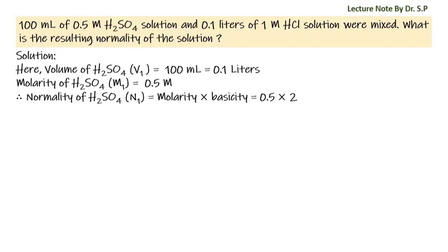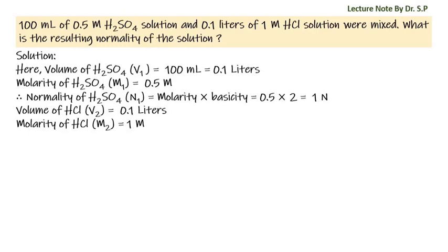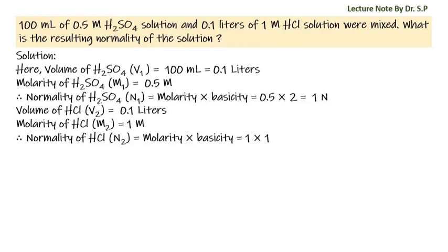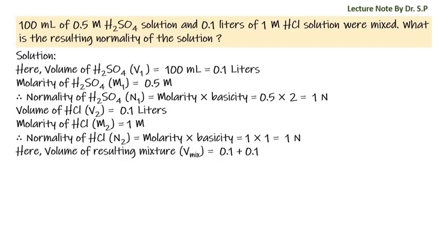So the resulting normality N1 is 1N. Given volume of hydrochloric acid V2 is equal to 0.1 liters. Given molarity of hydrochloric acid M2 is equal to 1 molar. Again, we have to convert molarity into normality. Therefore, normality of hydrochloric acid N2 is equal to molarity into basicity, that is 1 into 1, which equals 1N.